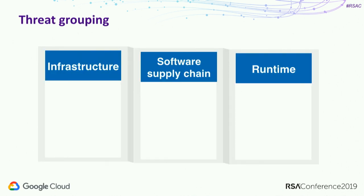My organization has been running containers in production for a long time and we've been thinking a lot about security on containerized applications. As part of our general threat modeling exercise, we divide threats up into groups to focus on them specifically. Three big groups we use are: infrastructure, software supply chain, and runtime.